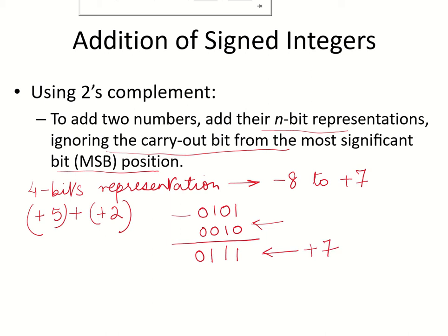You can see that this number was also positive because the most significant bit is 0. This is also a positive number, most significant bit is 0, and this is also a positive number which shows plus 7. Moreover, plus 7 is within this range and the answer is correct. Let us take another example.